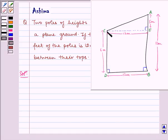We have to find the distance between the tops, that is AC. Now join CE and draw CE perpendicular to AB.